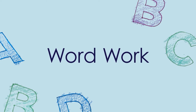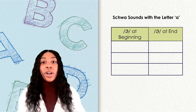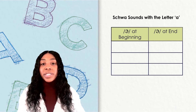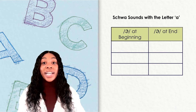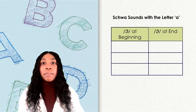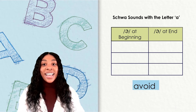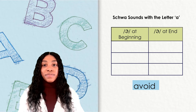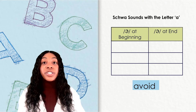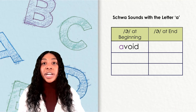Word work. We are going to investigate some more schwa words like the ones we heard in our poem. The uh sound can come at the beginning or the end of two-syllable words. We will decide where the schwa sound is in each word and put them in the correct columns. We will also write down the words, so have your paper and pencil ready. Here's our first word: avoid. Avoid has the schwa sound at the beginning. Say it with me — a-void. Go ahead and write down the word avoid on your paper.